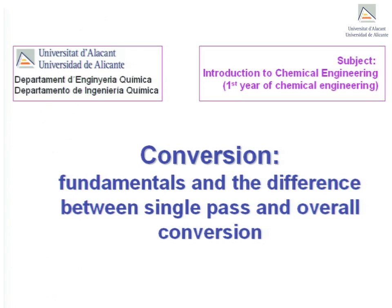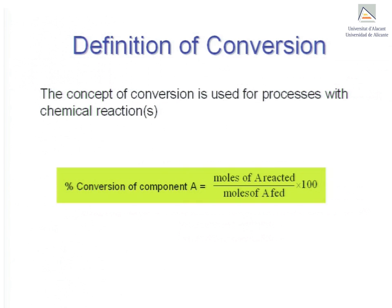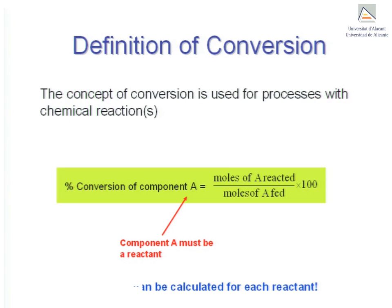Conversion: fundamentals and the difference between single-pass and overall conversion. The concept of conversion is used for processes in which chemical reactions take place and is defined as follows: percent conversion of component A equals moles of A reacted over moles of A fed, multiplied by 100. Component A must be a reactant, and it is important to note that a conversion can be calculated for each reactant.